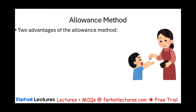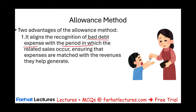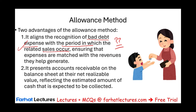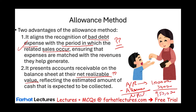Let's go back to the two advantages of the allowance method. One is it aligns bad debt expense with the period in which the related sale occurs — so it satisfies the matching principle, matching revenues with expenses. This was one of the disadvantages of the direct write-off method. The allowance method will solve this problem and make this method a GAAP method. The other advantage is it gives you what we call the net realizable value of the receivable — we show accounts receivable minus the allowance. So it doesn't overstate receivable.